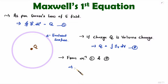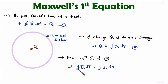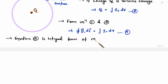If I say this is equation 1 and this is equation 2, then from equations 1 and 2, surface integration of electric flux density is equal to volume integration of volume charge density. And this is Maxwell's first equation in integral form — let us call this equation A.